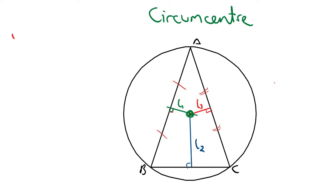All we need to do is know the equation of a line. We know that the formula is in the tables, where x1 and y1 are just a point on the line and m is the slope. If I'm looking for L1, the point on L1 that I know would be the midpoint of AB. The midpoint of AB we get from the formula in the tables: the x-values are added together and divided by 2, and the y-values are added together and divided by 2. The slope m of AB is going to be the perpendicular slope of AB.